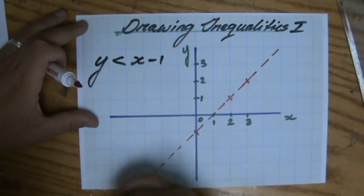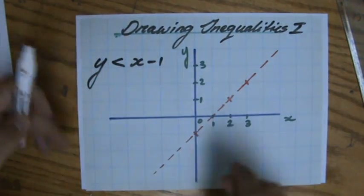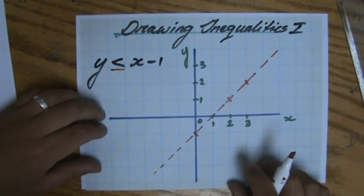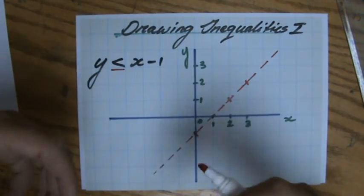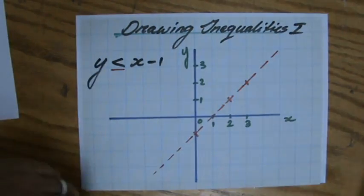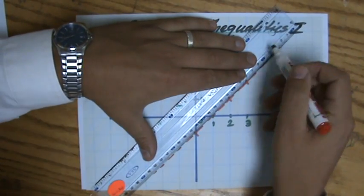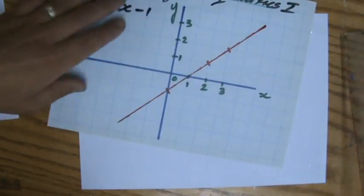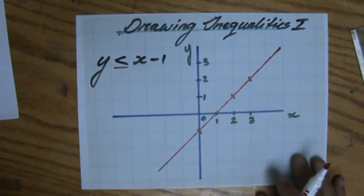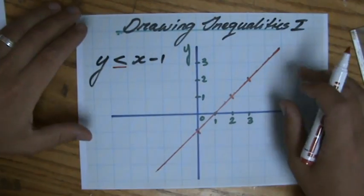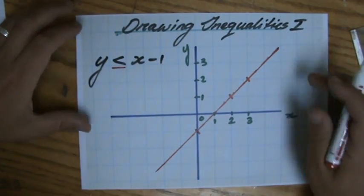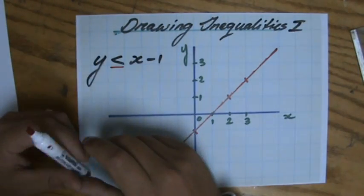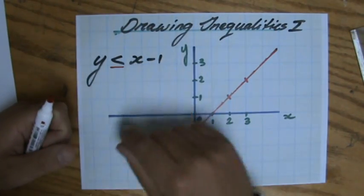So when it's only smaller or only bigger, you draw a dotted line. If the question would be smaller or equal to x minus 1, or for a different question bigger or equal, then you would draw a solid line to show that it is also equal to that line — which is exactly the same as if you were drawing an equation. More example questions in the next video. Check my site, explainingmaths.com, and like and share this video if it was useful.